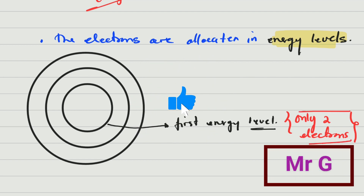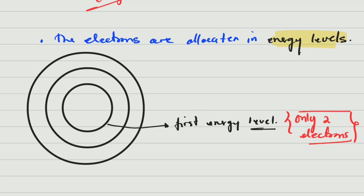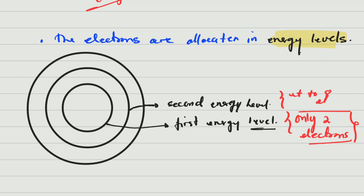If there are three electrons then they must go to the second energy level. The first energy level is the one closest to the center. The second energy level is the one that comes afterwards. You don't have to draw all of them — you draw one and then if you need, you draw the second one. That second energy level can hold up to eight electrons. It can hold less but not more than eight.